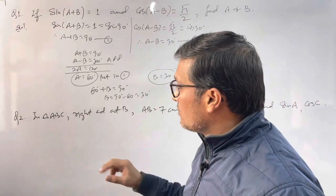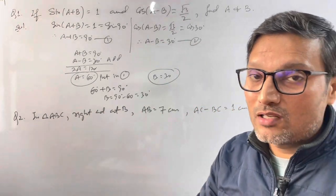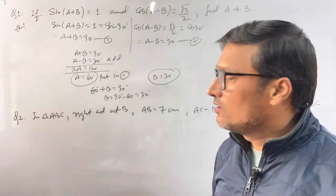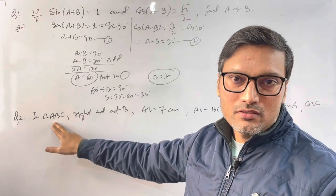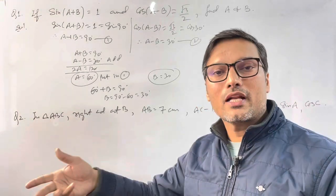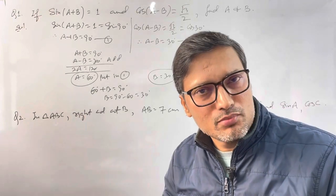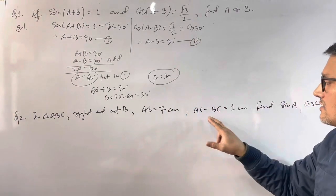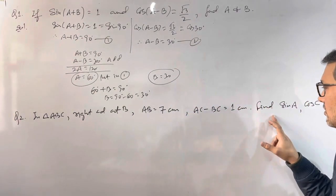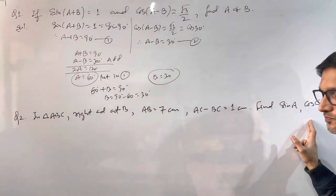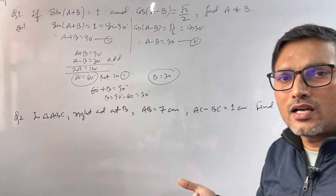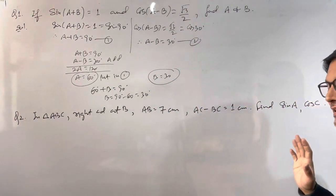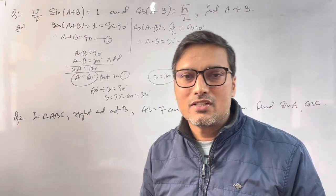Question number 2 is also very simple. In Exercise 8.1 you will find a similar question — the exact terms may differ but the solving pattern is the same. In triangle ABC, right angle at B. AB is given as 7 cm. The difference of AC and BC is given, and we need to find sin A and cos C. The teacher may give any ratio — tan, cot, sec — but the concept is the same. The basic definitions of sin, cos, and tan are needed here.